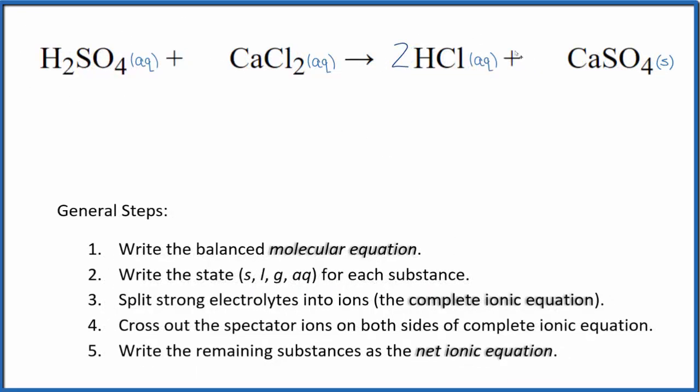Sulfuric acid and hydrochloric acid, these are both strong acids, so they'll be soluble. Calcium chloride, compounds with the chloride ion in general, are soluble. But calcium sulfate, if you look this up on a solubility table, it's slightly soluble. For the purpose of net ionic equations, we say slightly soluble is insoluble. So this will be our precipitate. It'll fall to the bottom of the test tube.